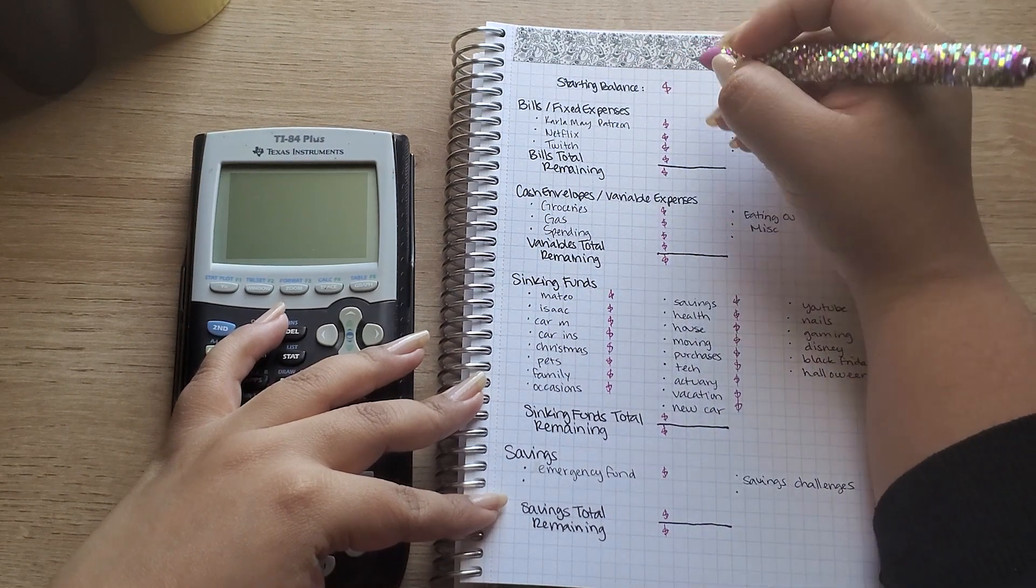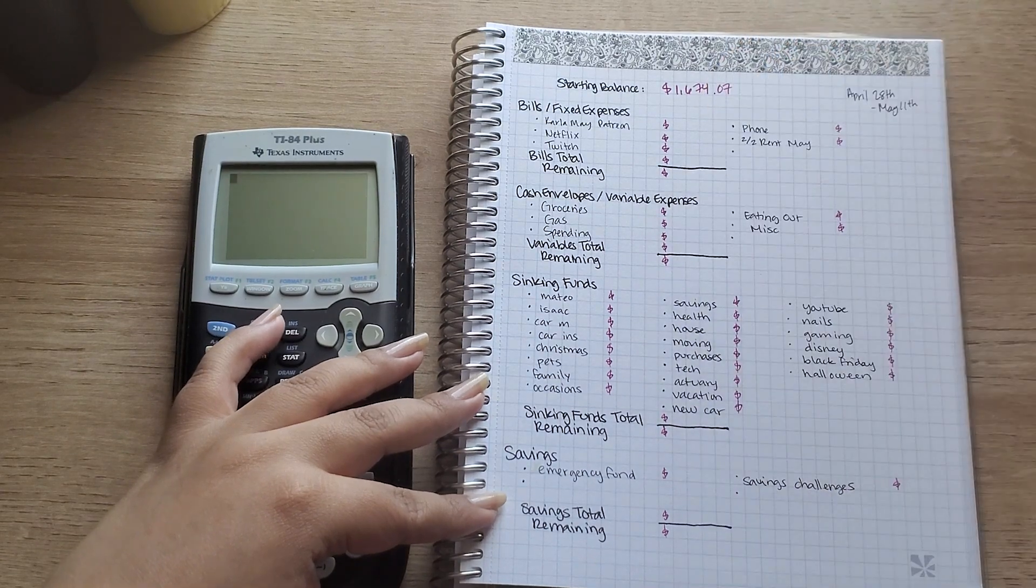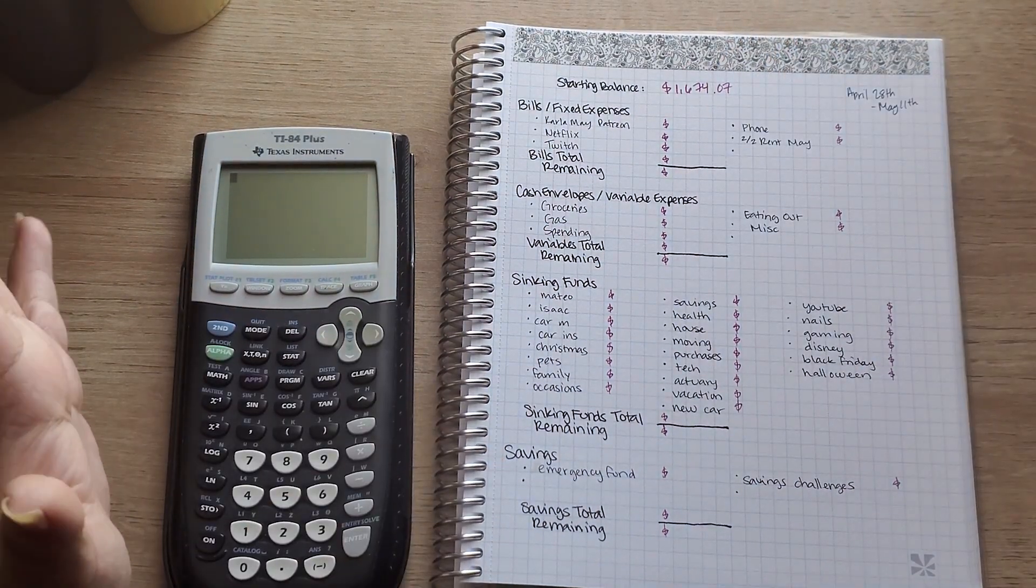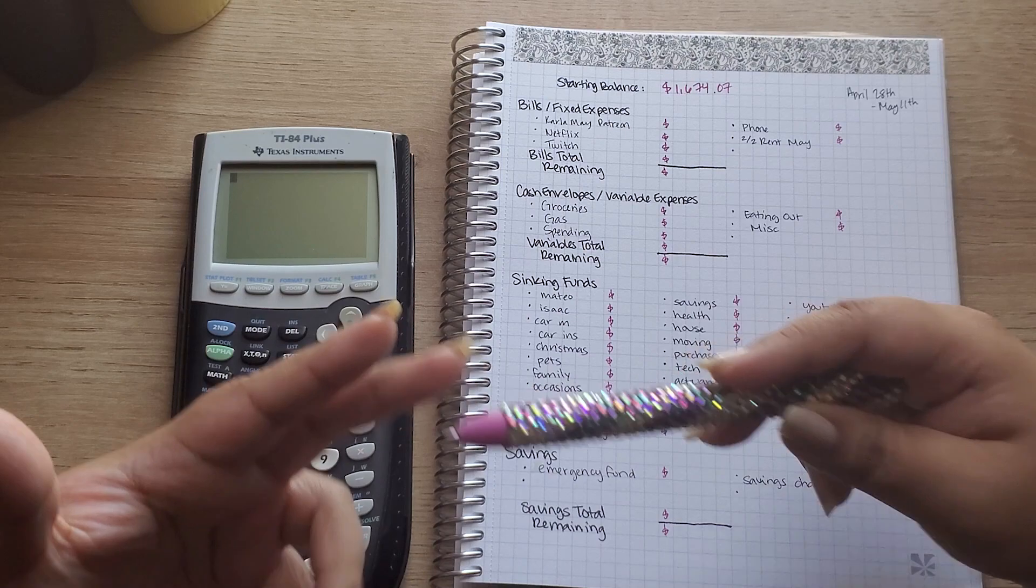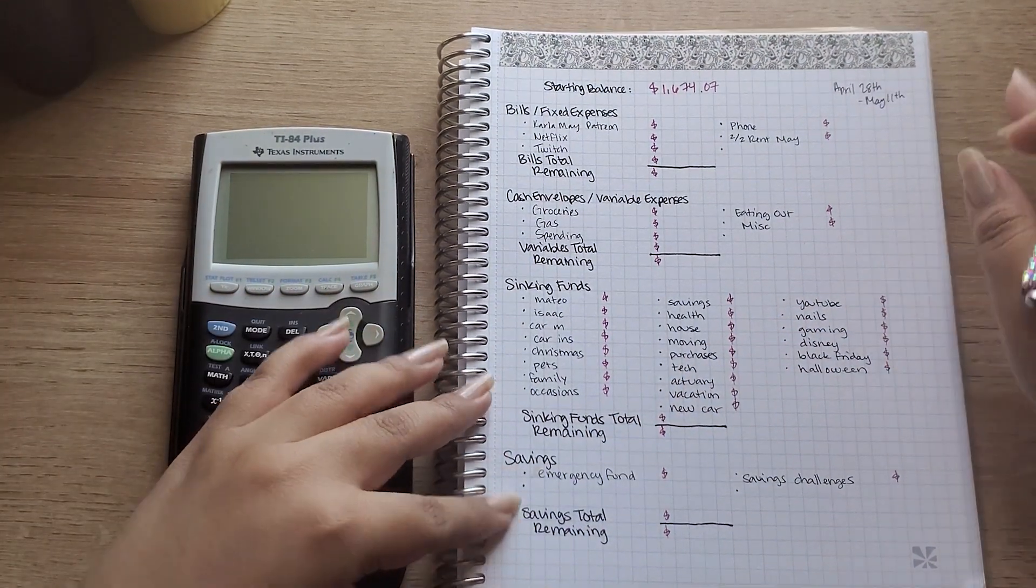Okay guys, so now that I have zoomed in, let's begin. So my starting balance for this paycheck is $1,674.07. That's my starting balance that includes any rollover, my paycheck, cashback money from my boyfriend, so it's all kind of included into one.